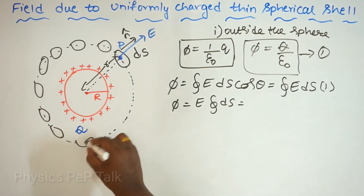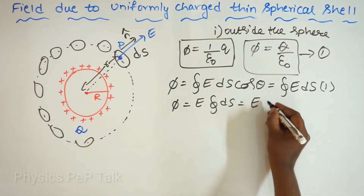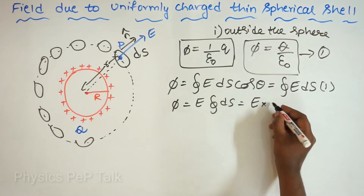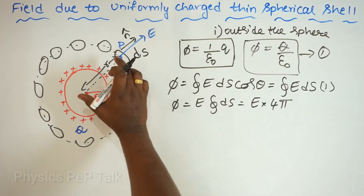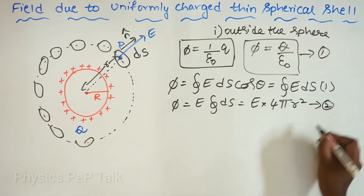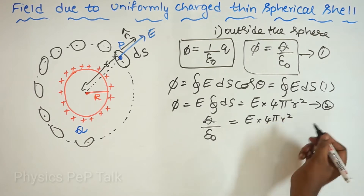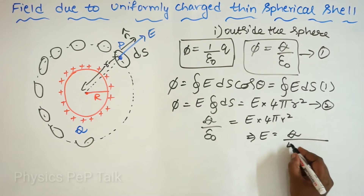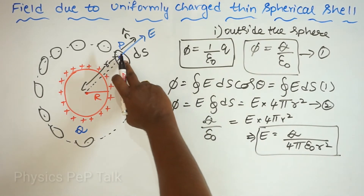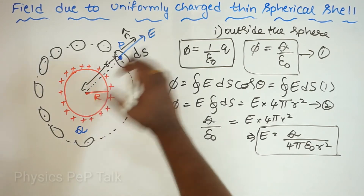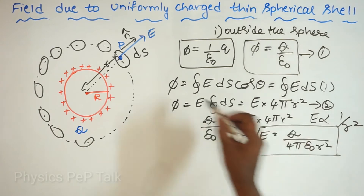Integrating ds over the complete Gaussian sphere gives the total surface area: 4 pi r squared, where r is the radius of the Gaussian sphere (small r). So E into 4 pi r squared equals Q by epsilon naught (equating equations 1 and 2). This gives E = Q / (4 pi epsilon naught r squared). This is the electric field at point P, at distance small r outside the thin spherical shell. E is inversely proportional to the square of the distance from the center.